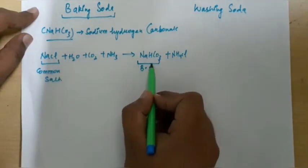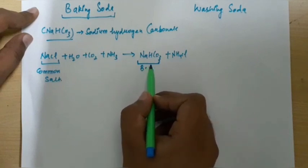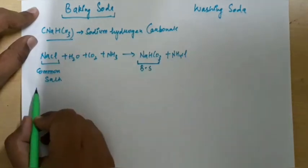So this baking soda NaHCO3 is commonly called baking soda and its chemical name is Sodium Hydrogen Carbonate. So let us see its uses.